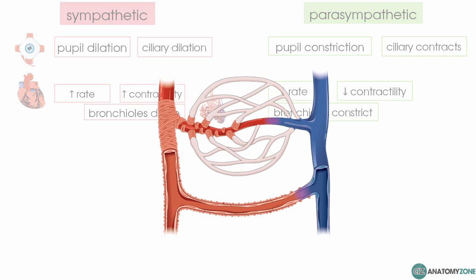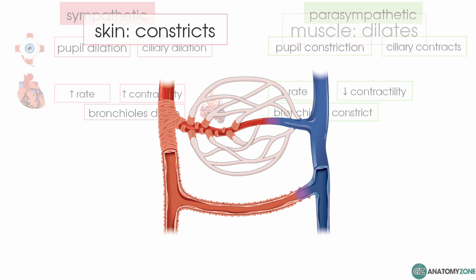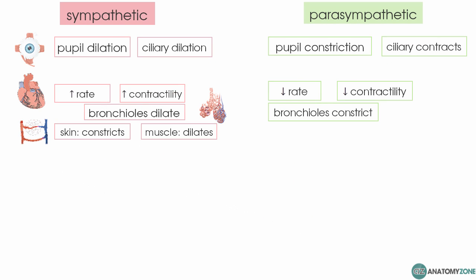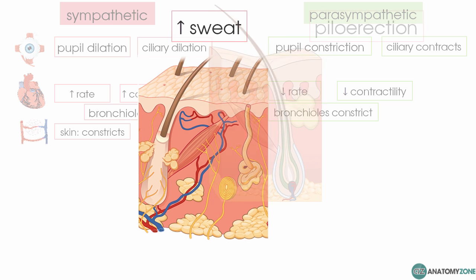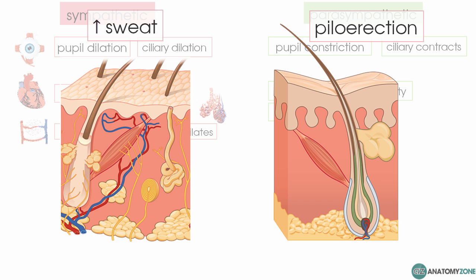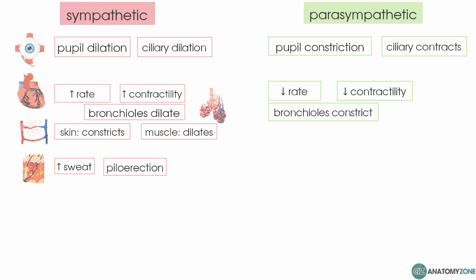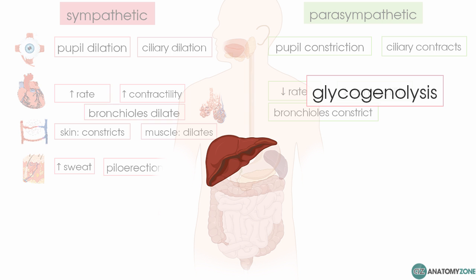In terms of blood vessels, those supplying the skin constrict and blood is shunted towards skeletal muscle, allowing the caveman to run away. In addition, the sweat glands in the skin are stimulated — you get increased sweating in preparation for the increase in heat — and you also get contraction of the pilomotor muscles. Energy substrates are also mobilized: the glycogen stores in the liver are broken down and you get an increase in blood sugar.